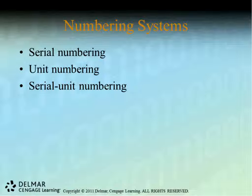The next type is a serial-unit numbering system. Facilities sometimes use this to try to be in compliance with Joint Commission when they're not using pure unit numbering. With serial-unit, the patient gets a new number every time they are admitted, but the old number is then moved forward to the new number. Every time the patient comes in, all old numbers have to move forward, which creates a lot of work for someone maintaining the Master Patient Index — a disadvantage. All advantages and disadvantages are in Table 7-1.